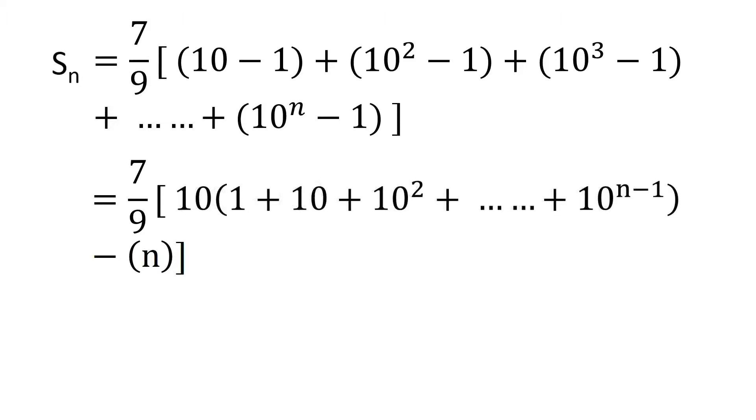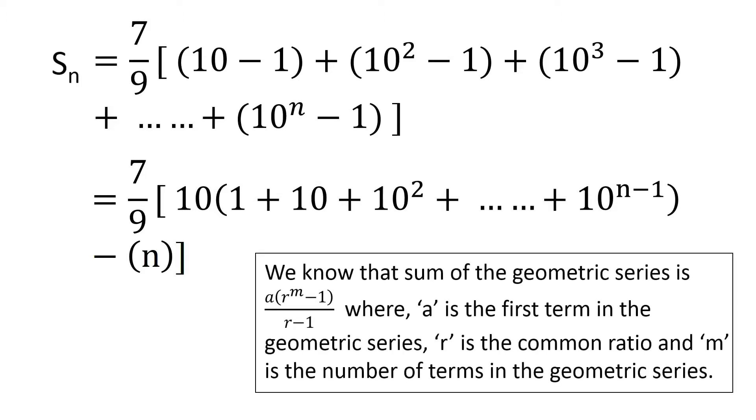Let's factor out a 10 from the geometric series. We know that the sum of the geometric series is a times r raised to the power m, minus 1, divided by r minus 1, where a is the first term in the geometric series, r is the common ratio, and m is the number of terms in the geometric series.